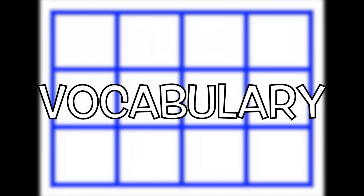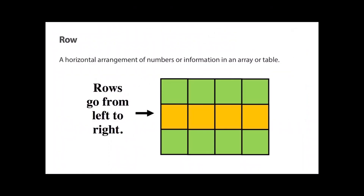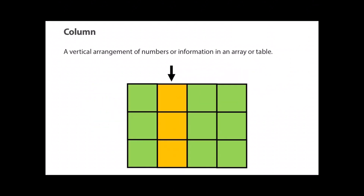First, a couple of academic vocabulary words used throughout this lesson. A row is a horizontal arrangement of numbers or information in an array or table — rows go from left to right, as shown by the yellow row. A column is a vertical arrangement of numbers or information in an array or table, going vertically as shown by the yellow column. Rows and columns make up an array.